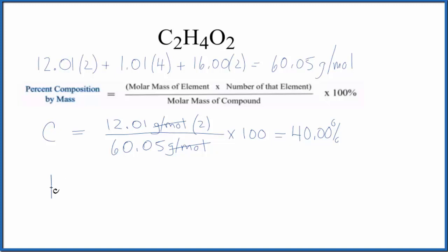For the hydrogen: hydrogen on the periodic table is 1.01 grams per mole. I won't write them since the units cancel out. Number of atoms: four hydrogen atoms. And again, we divide it by the molar mass for the compound. The compound, this is 60.05. Multiply by one hundred, and we get 6.73 percent.